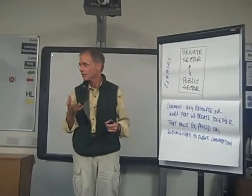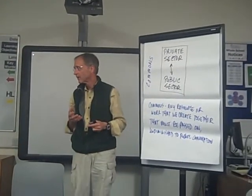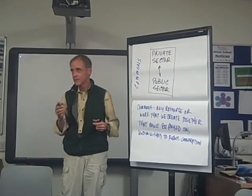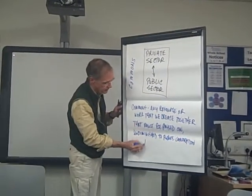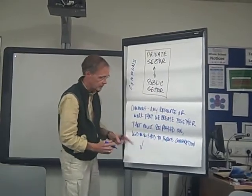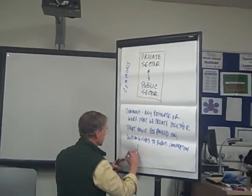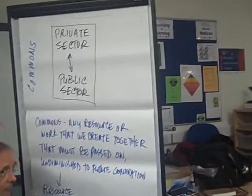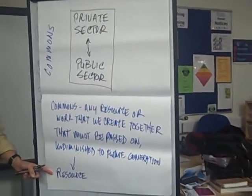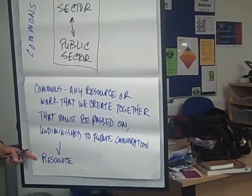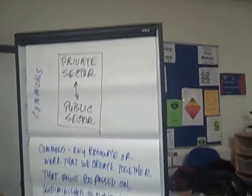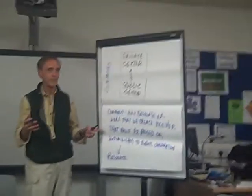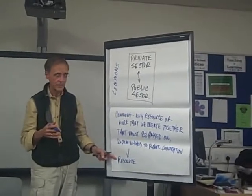So what kinds of commons really are there? We can think of maybe three types that have some distinguishing characteristics. One are resource commons. Can you think of an example? Common pasture. What about air and water? Air, water, the oceans. Plants can be common. Land is a resource commons.